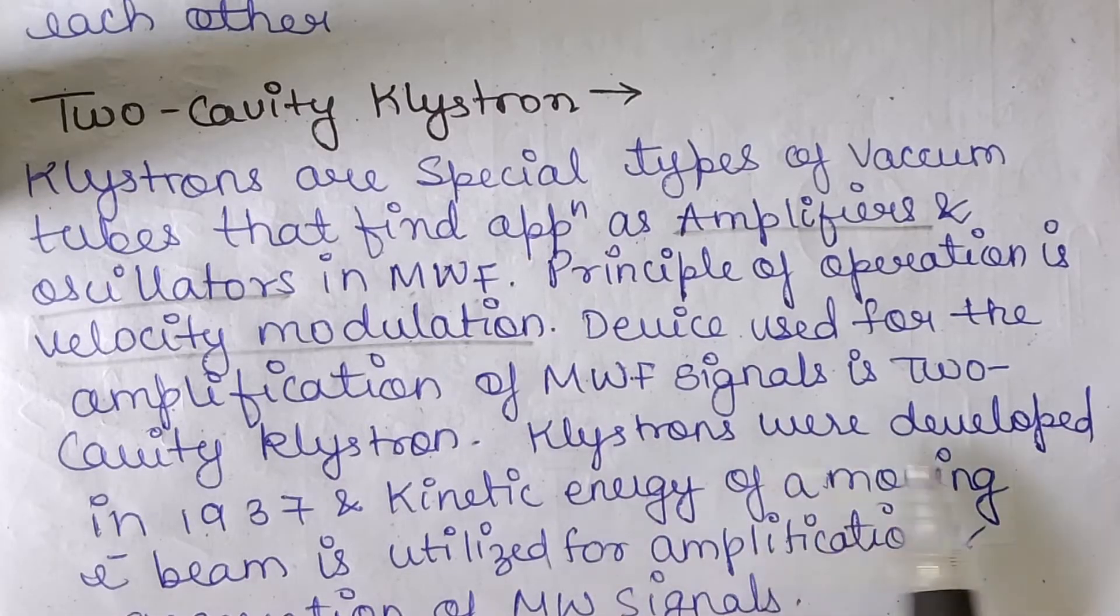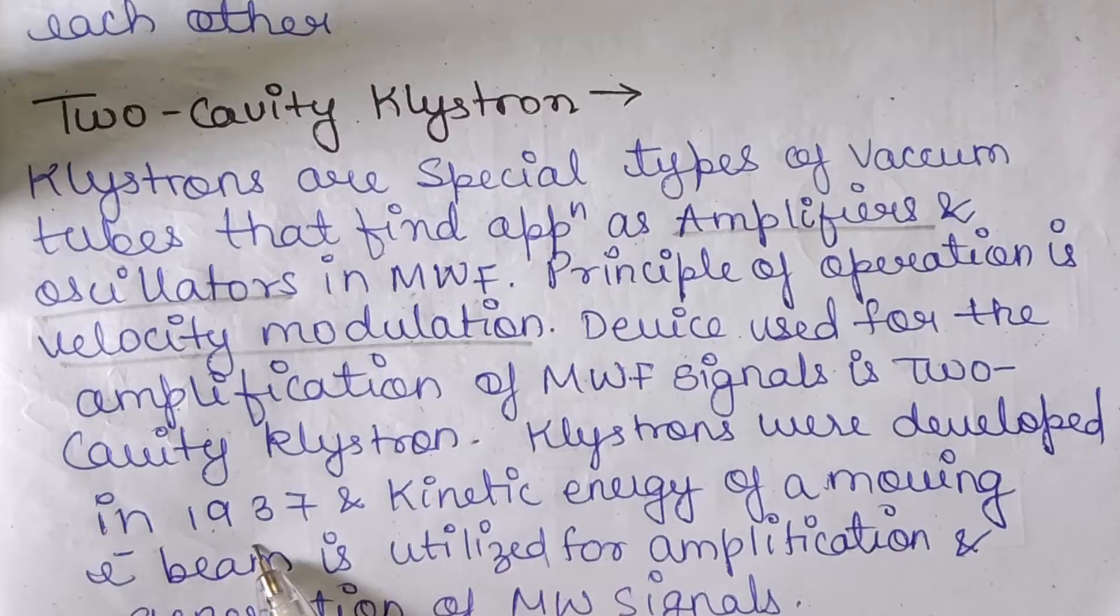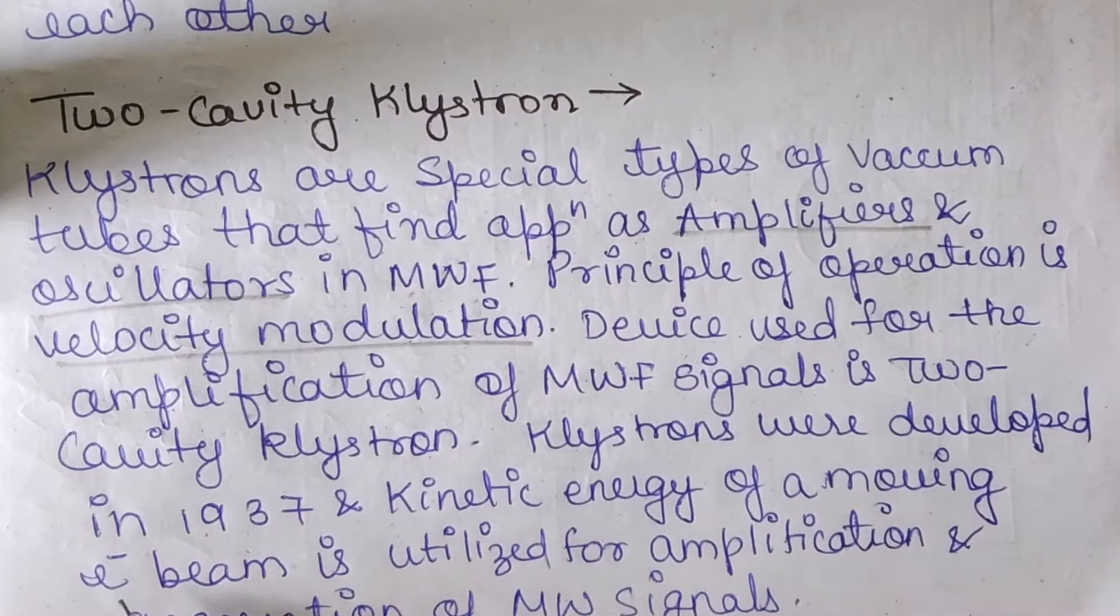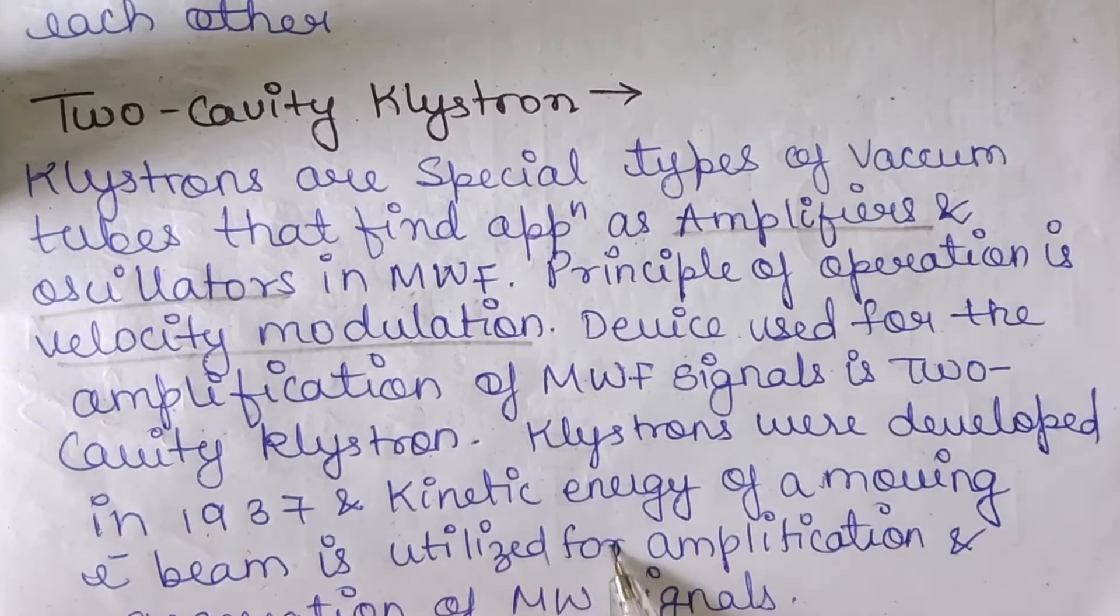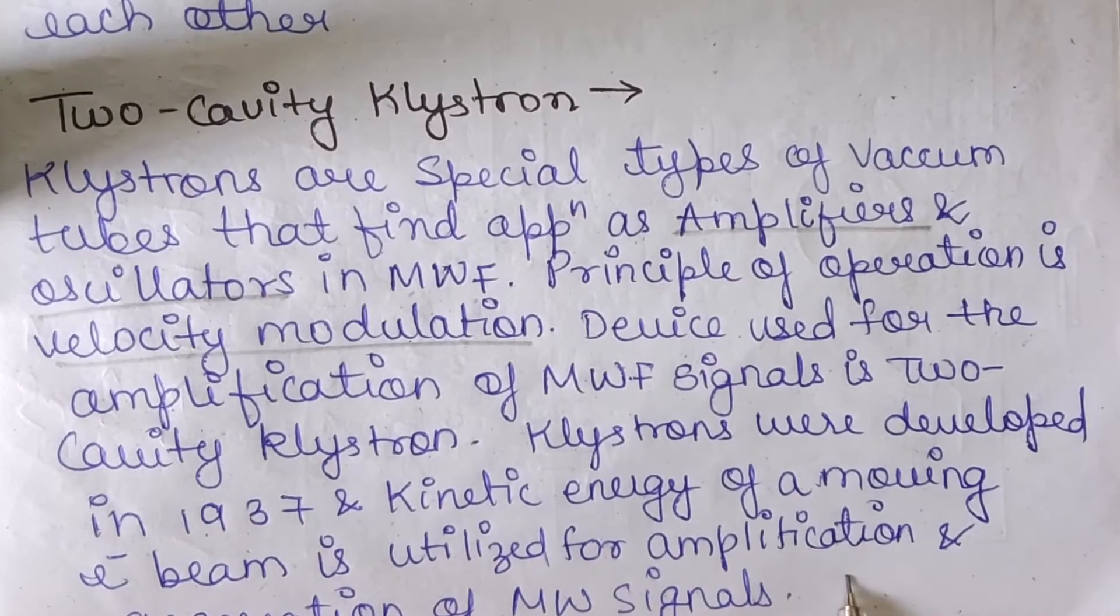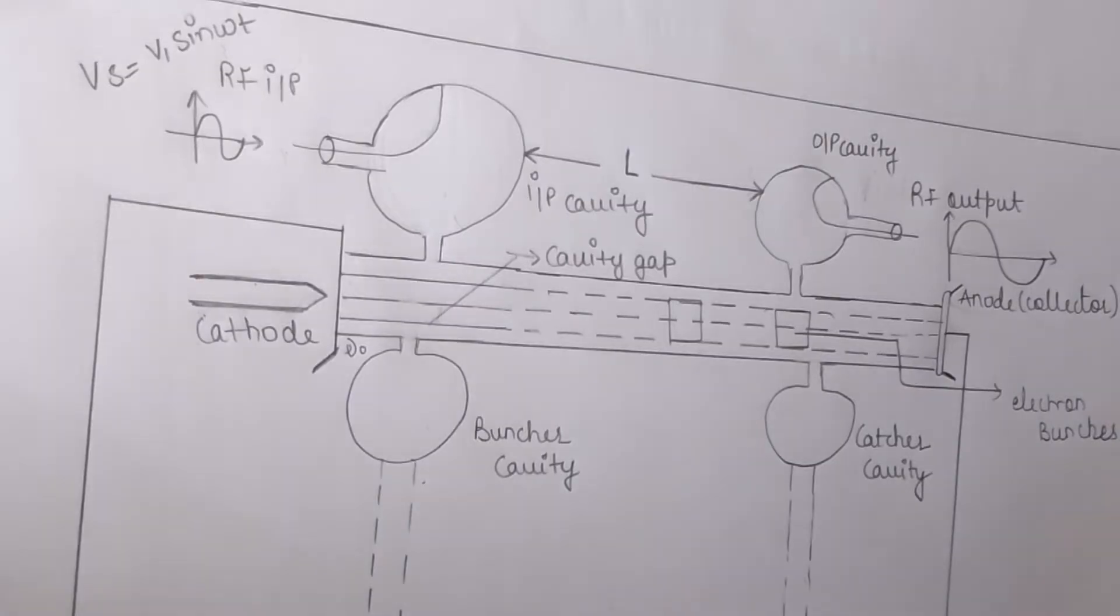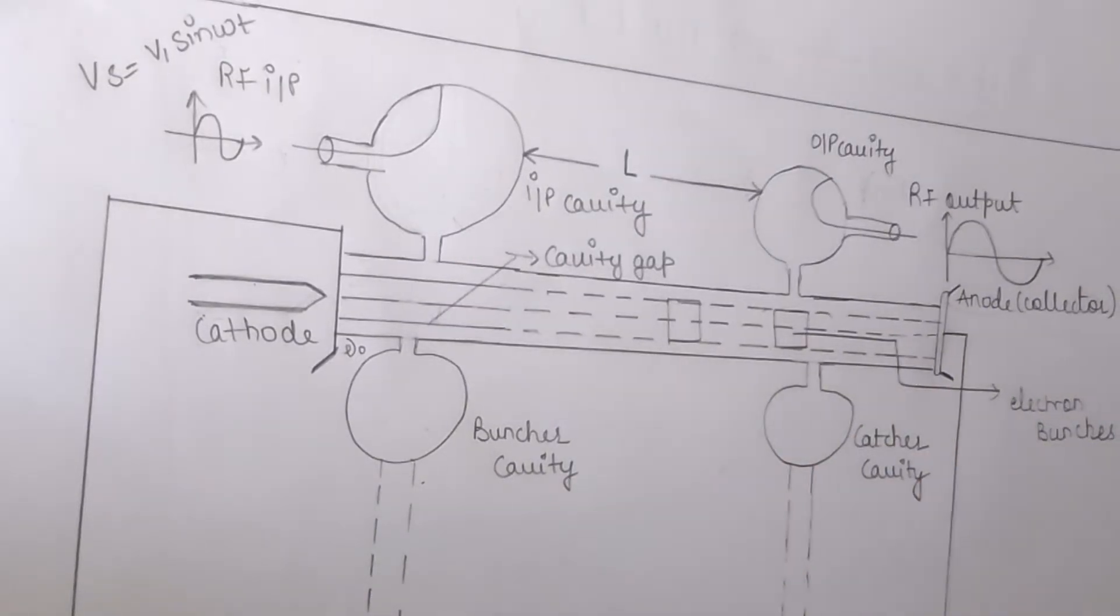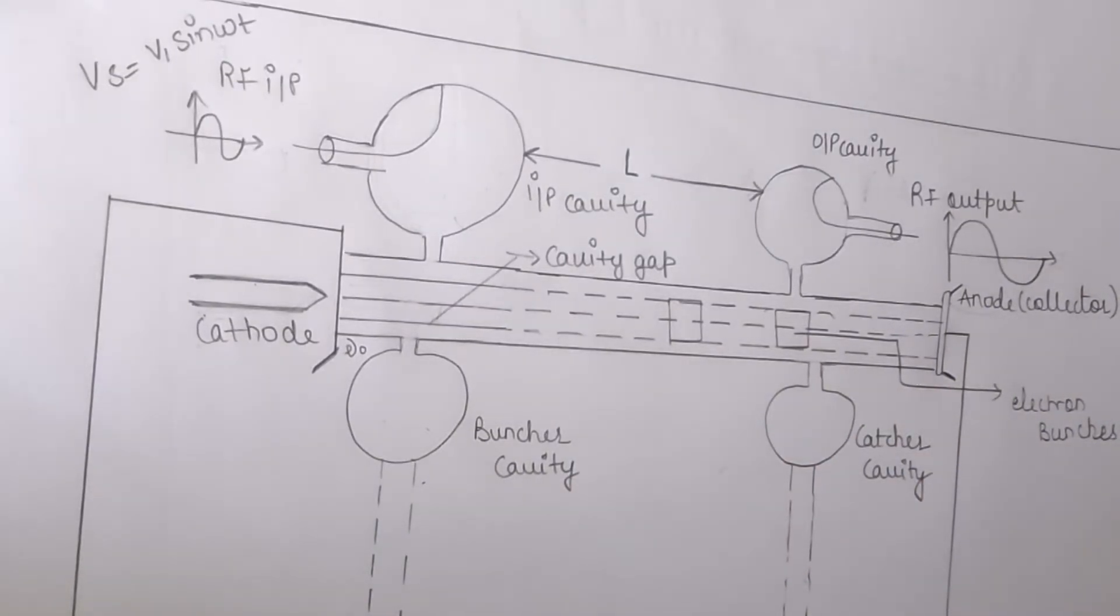The klystrons were developed in 1937 and the kinetic energy of a moving electron beam is utilized for the amplification and generation of the microwave signals. Now, in this diagram, you can see a two-cavity klystron amplifier. So firstly, let's know about the parts of this two-cavity klystron amplifier in brief.